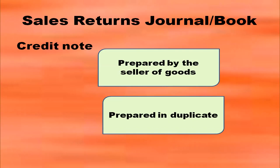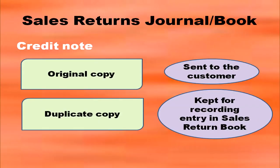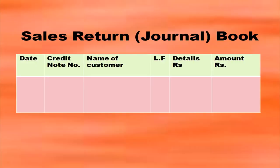When sales returns take place, you have to prepare a credit note, and it is prepared by the seller of the goods. The original copy is sent to the customer — that is, his account is credited with this amount. The duplicate copy of the credit note is kept for recording entry in the sales returns book. The sales returns book has columns: date, credit note number, name of the customer, ledger folio, details, and amount.